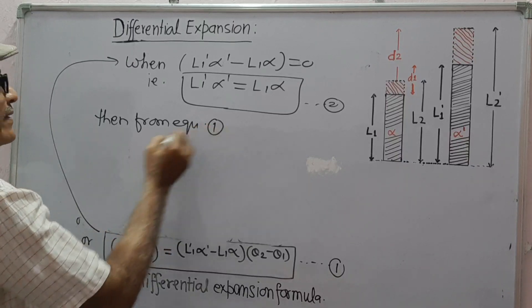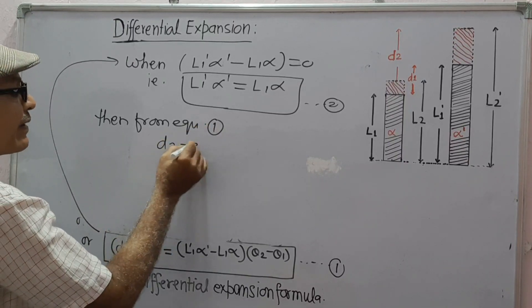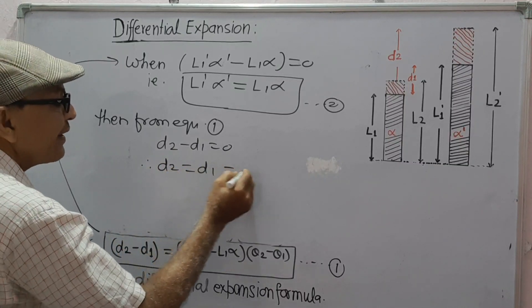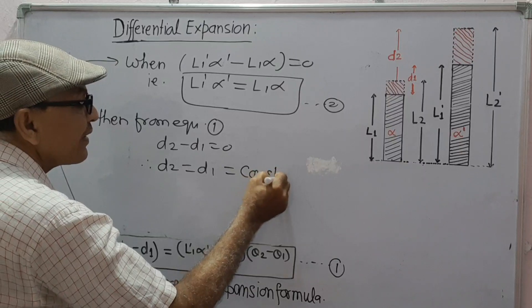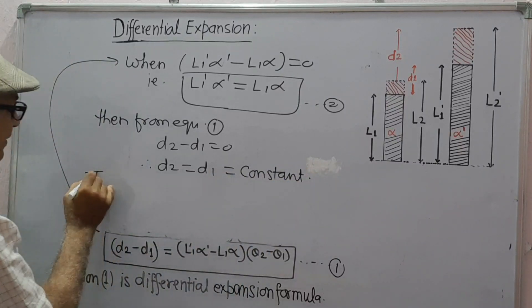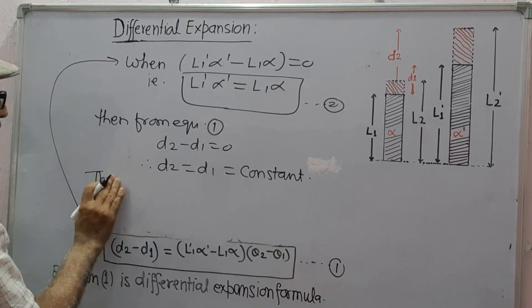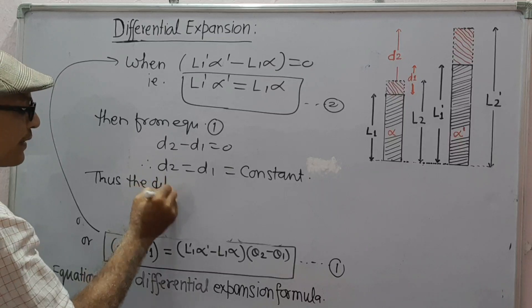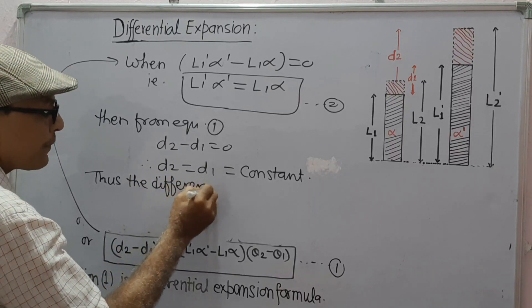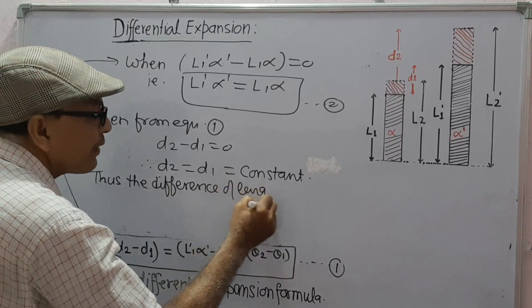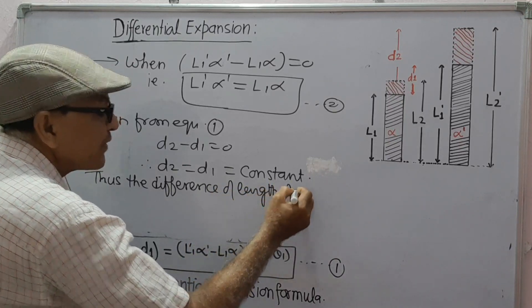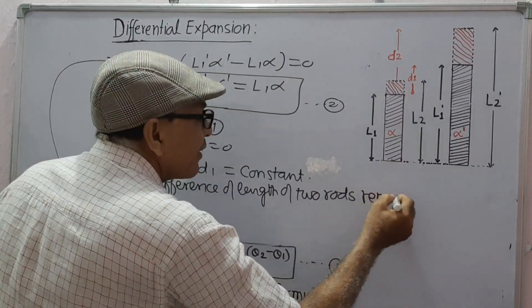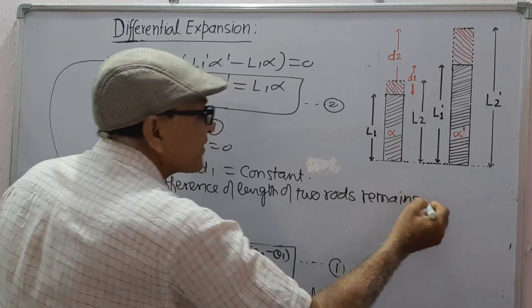When the condition of equation 2 holds, D2 minus D1 equals zero, so D2 equals D1 equals constant. That is, the difference of lengths of the two rods remains constant.